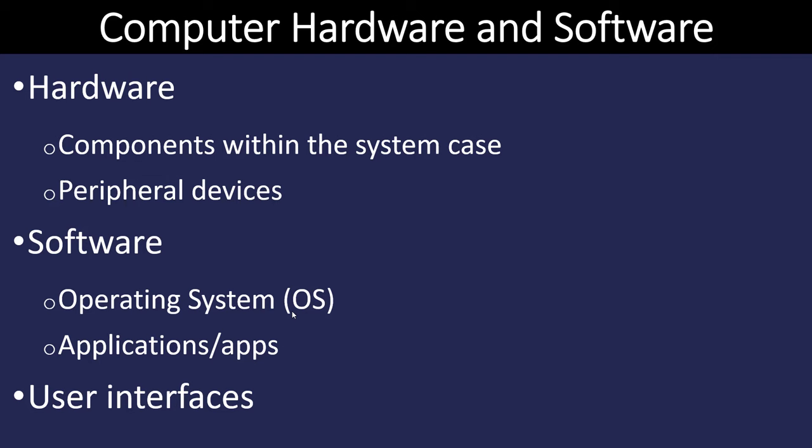Software is what the computer uses to perform its functions. There are two categories: operating systems and applications. Neither of these things can we reach out and touch, but we do use them — they exist in what we like to call cyberspace.